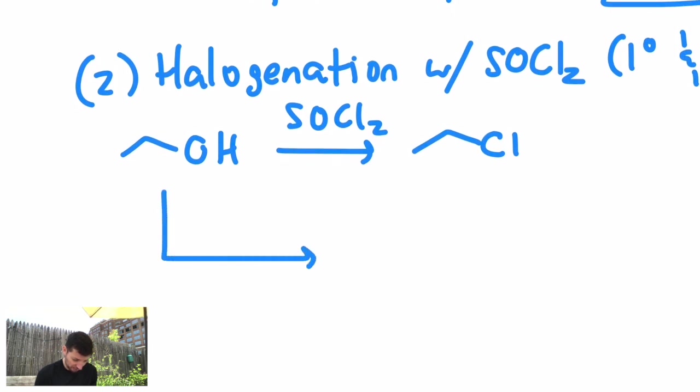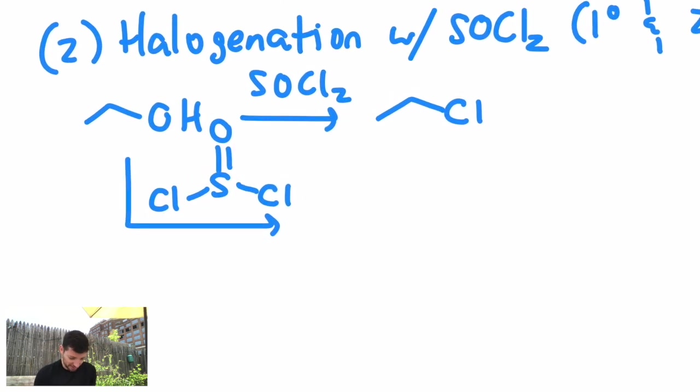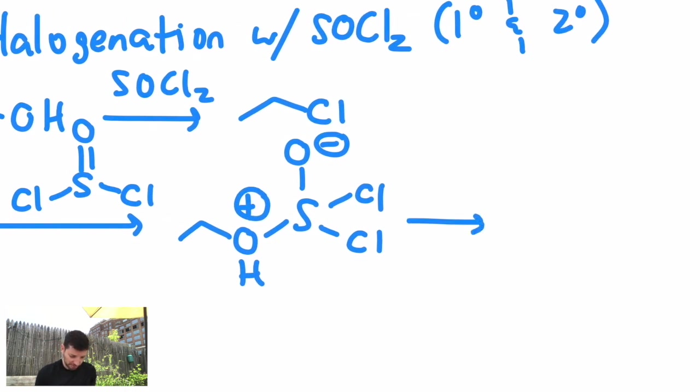We draw out SOCl2. Looks like this. The alcohol attacks the sulfur. You actually bring the electrons up to a sulfur-oxygen bond. You actually reform the sulfur-oxygen bond. It comes back down, kicks out a chloride. You lose an equivalent of HCl and abbreviate all that right here.